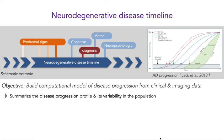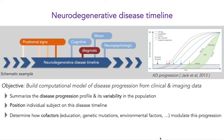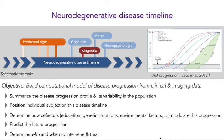These models serve the following purposes. First, to summarize the disease progression and its variability within the population. Then, to be able to position any individual subject on this disease timeline and to know at what disease stage he or she is. Then we'd like to determine how cofactors such as education level, genetic mutations, and environmental factors modulate this progression. Also, based on the positioning of an individual, we'd like to predict their future progression, and finally determine who and when to intervene and treat the patient based on their profile.